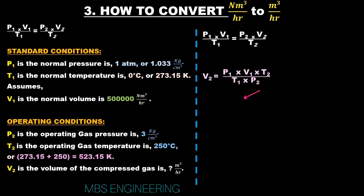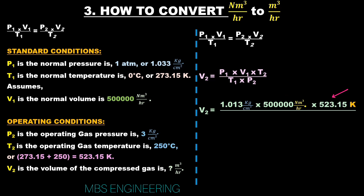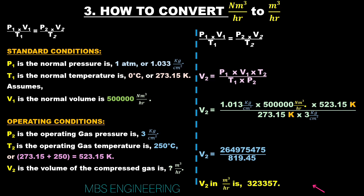Applying the standard and operating condition values: V2 = (1.013 kg/cm² × 500,000 Nm³/hr × 523.15 K) / (273.15 K × 3 kg/cm²). This gives V2 = 264,975,475 / 819.45. Therefore, V2 = 323,357.709 m³/hr.